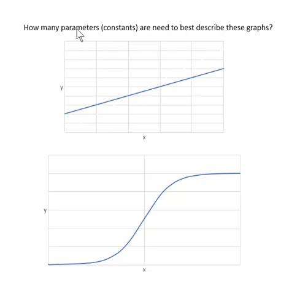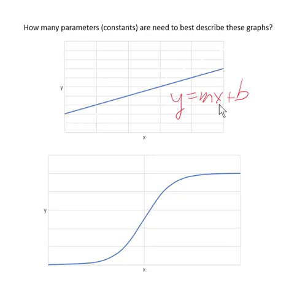There is a mathematical form of the straight line. How many parameters or constants are needed to describe it? The equation of a straight line is y = mx + b. There are two parameters: slope and y-intercept. If you know the y-intercept and the slope, you can draw the line. But binding data doesn't look like that unless you use a limited range of the ligand concentration.